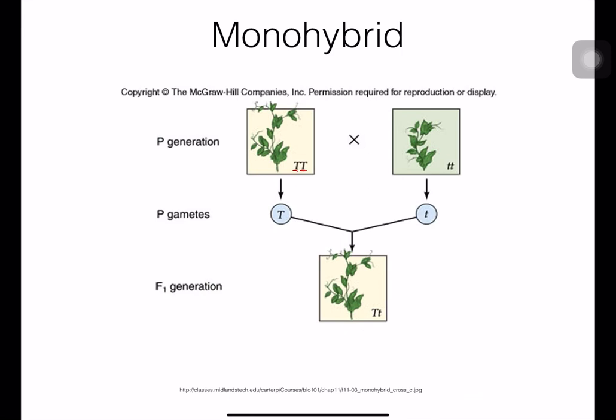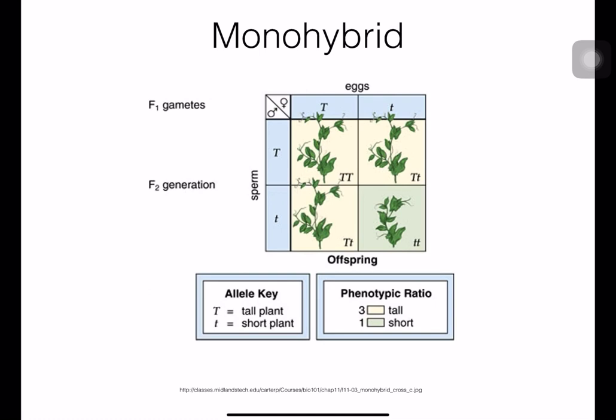In the P generation, we use the gene code TT for one parent and tt for the other parent. When they develop gametes, the TT parent produces T gametes and the tt parent produces t gametes. When they combine together, the F1 gets the genotype Tt. In the second step of crossing, Tt is crossed with Tt, and we first separate the genes to get T and t from each parent.